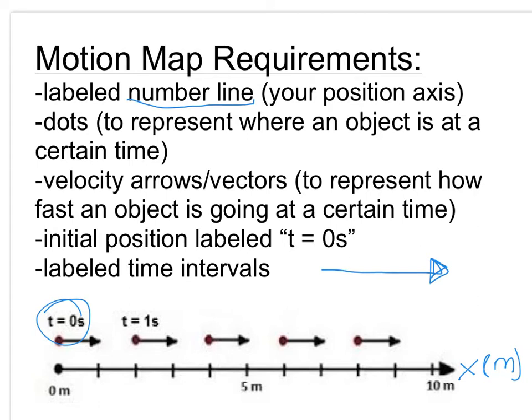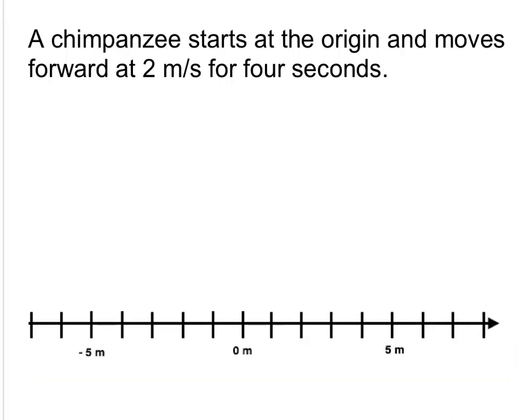And finally, it's not on here, but labeled time intervals. A labeled time interval would tell you how much time has passed between each dot. So in the motion map below, you would write somewhere near the beginning that you're using time intervals of one second. All right, so let's give this one a try.